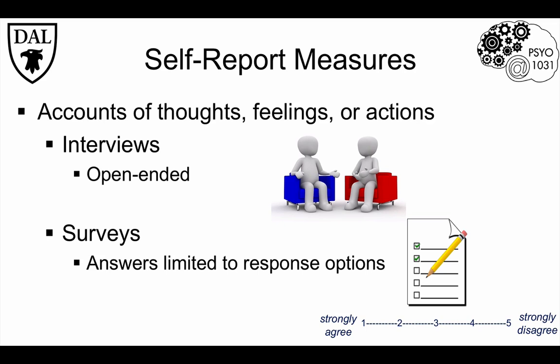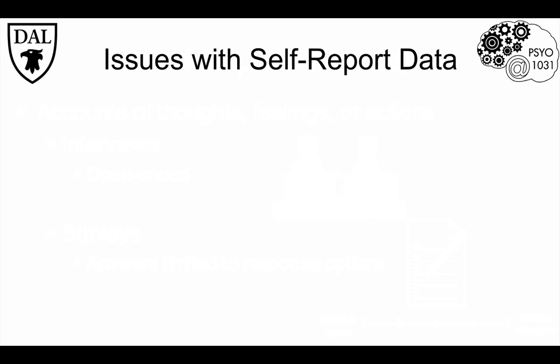Note that the only information possible to collect is what is included in the questionnaire, so the nature of the participant's response depends on how the questions are worded. There are a number of issues to consider when using self-reports. One big one is that this method is limited to literate humans, so it excludes young children and animals. Language proficiency can also affect data, especially with questionnaire-based surveys, since many are available only in English and this could present difficulties in interpretation of questions by non-native English speakers.